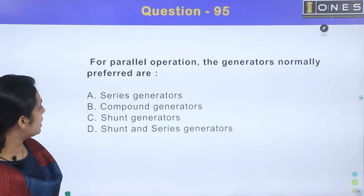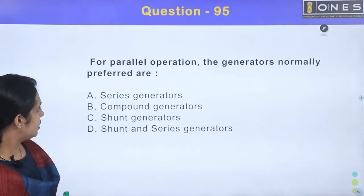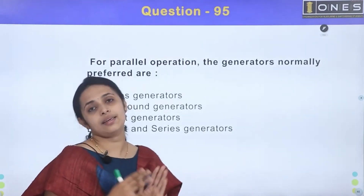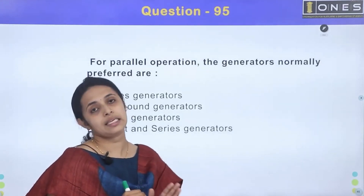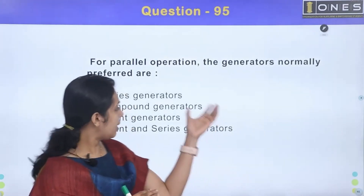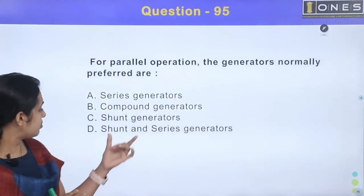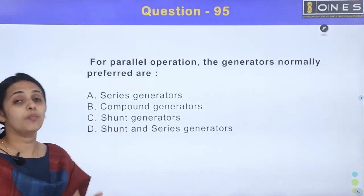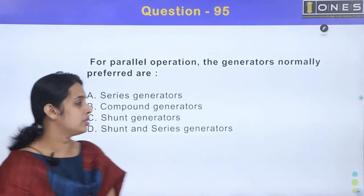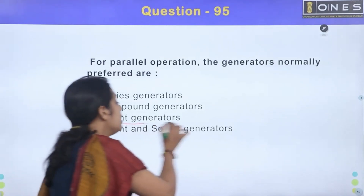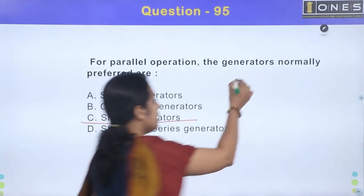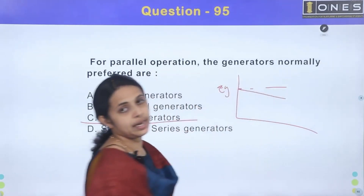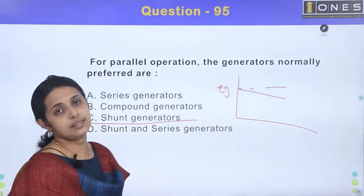For parallel operation, the generators normally preferred are? For parallel operation with drooping characteristics, we have to select the right generator. We can use a series generator, shunt motor, or shunt generator. We have to use drooping characteristics. If parallel operation requires the best generator, it is definitely a shunt generator, because we have to use terminal voltage characteristics with drooping characteristics for parallel operation.